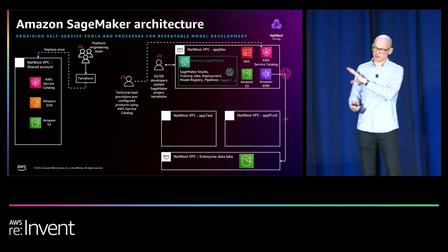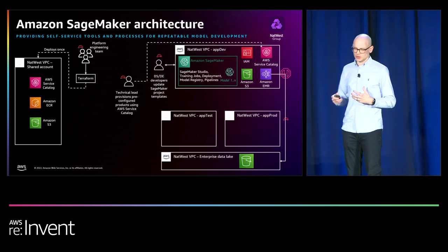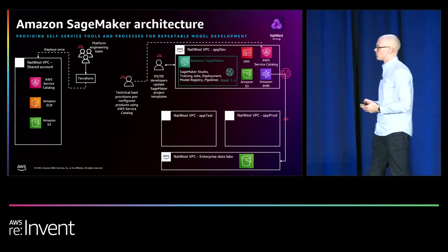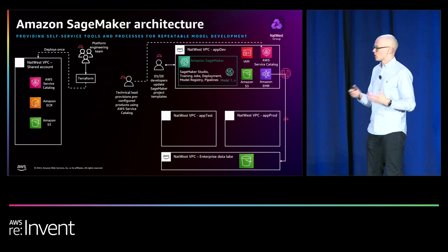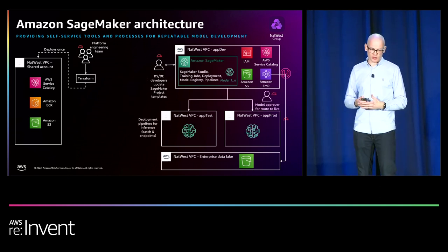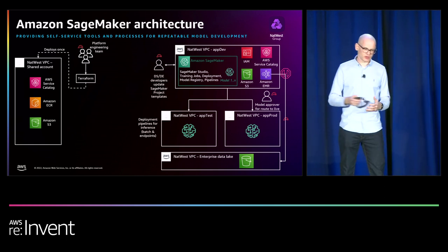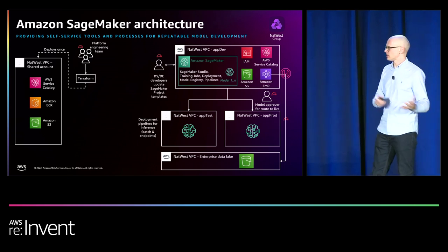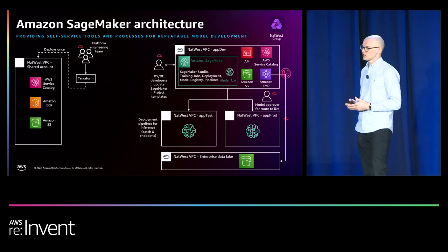The development, testing, and production accounts relate to how they're used in the data science lifecycle. In development, data scientists use notebooks for data analysis, data wrangling, and building first models and pipelines. The testing account mirrors production and is used for testing inference workloads before promoting to production. Once the data science team builds models they're happy with, a model approver role can view metrics via Studio, check for data bias and explainability, and then promote those models and pipelines into the test and production account with a few clicks in the console — giving us inference pipelines in a production environment.